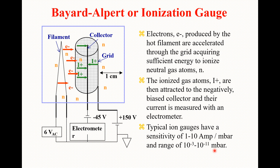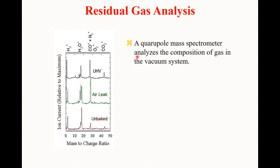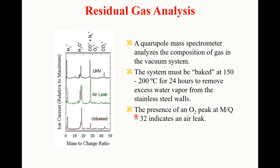For residual gas analysis in a vacuum system, a quadrupole mass spectrometer analyzes the composition of the gases. The system must be baked at 150 to 200 degrees centigrade for 24 hours, and the purpose of this baking is to remove excess water vapor from the stainless steel walls.